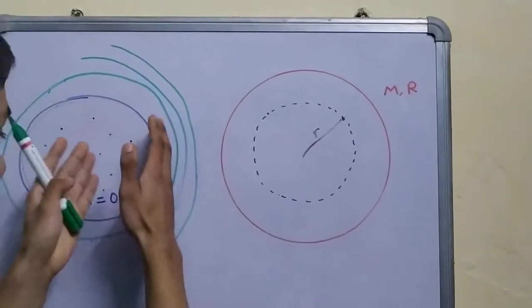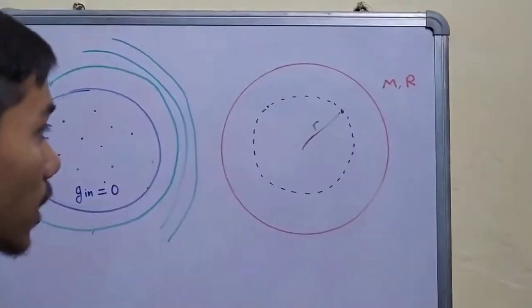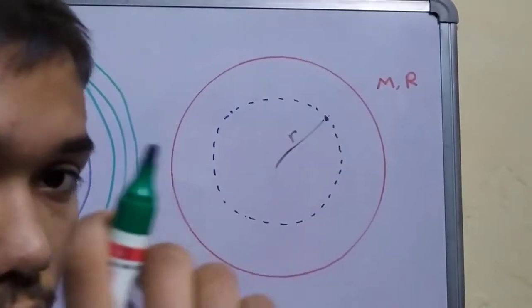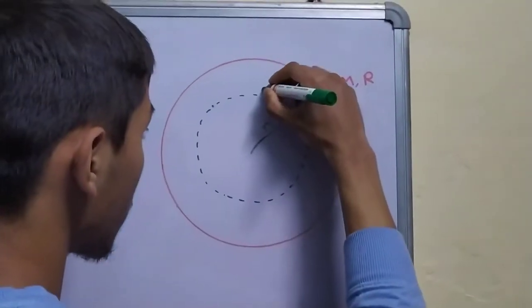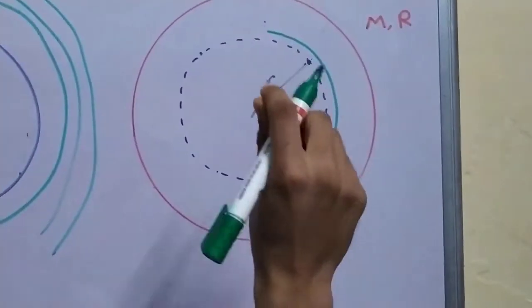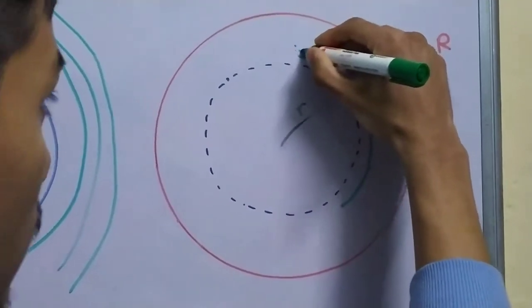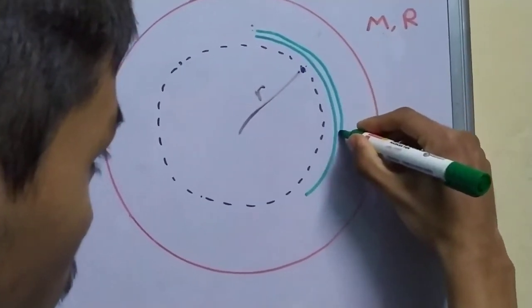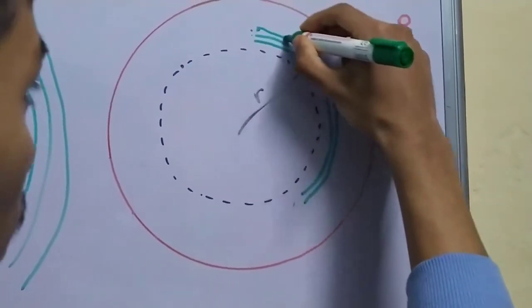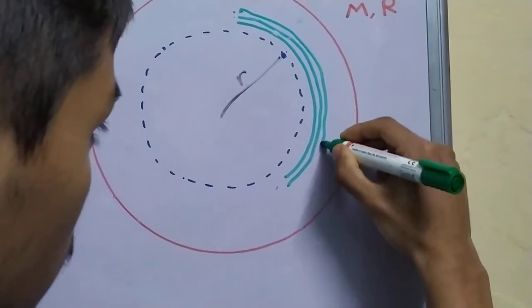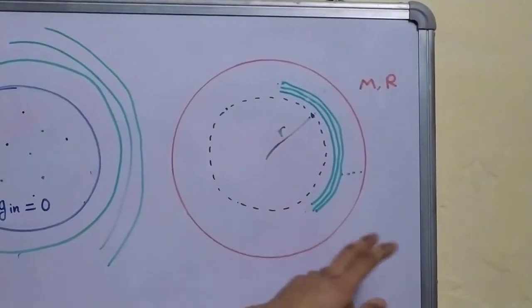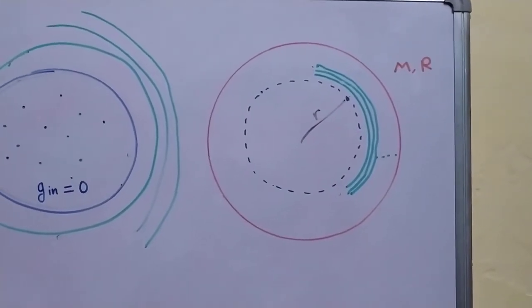We can apply the same logic in this situation as well. We can divide this thick shell into very small hollow shells. You have this shell and then at a very small distance away from this, you have another shell, and so on. So a large amount of very thin shells.